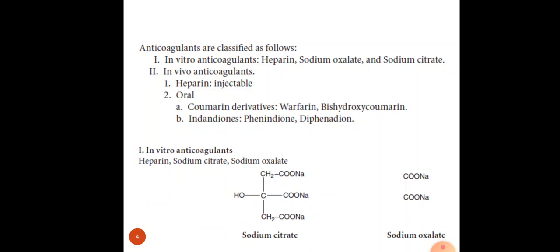Now, coming to the first class that is in vitro anticoagulants. As already the examples are given like heparin, sodium citrate and sodium oxalate. Here, I have shown the structure of two in vitro anticoagulants that is sodium citrate and sodium oxalate.